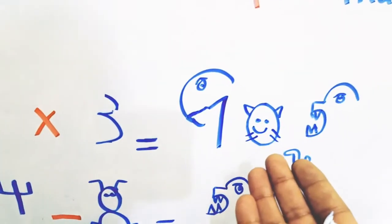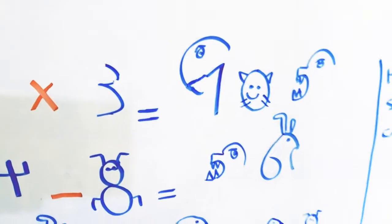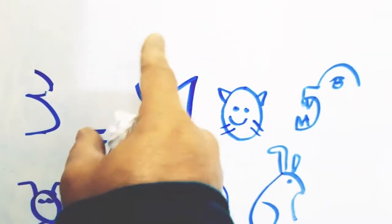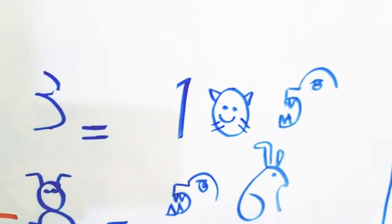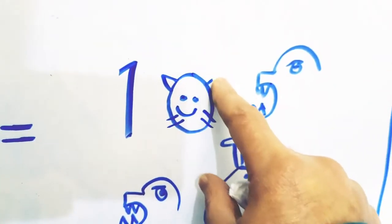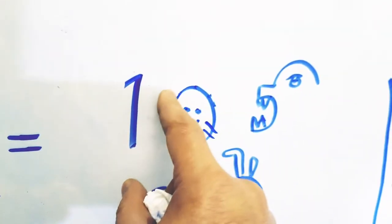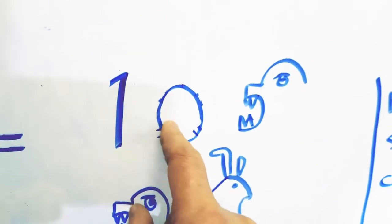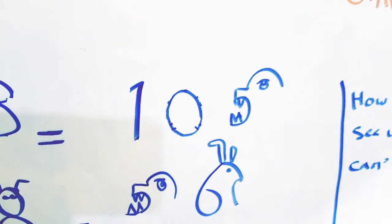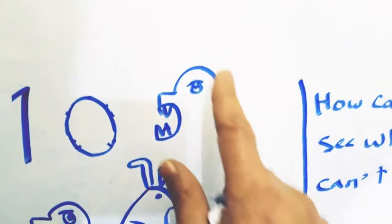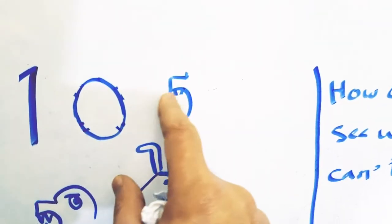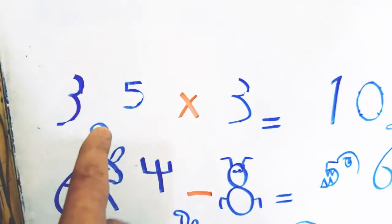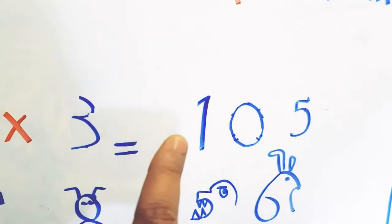As we have just done with the birds and animals, we will do the same with such drawings — we will delete or clear out some parts of each drawing. Now we have one. We move to the second drawing and delete some parts to reach the correct digit. We have now zero. For this animal, we clear out some parts — now we have one, zero, five. So 35 times 3 equals 105.